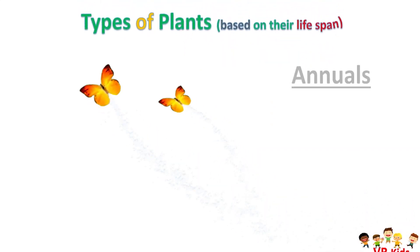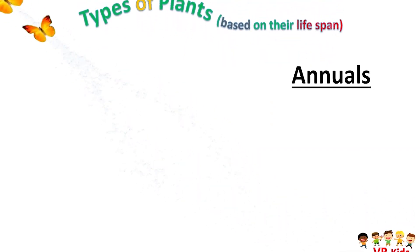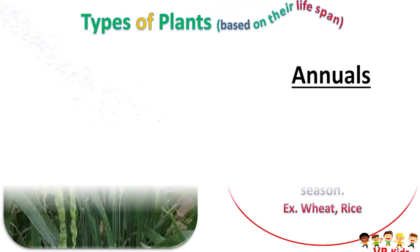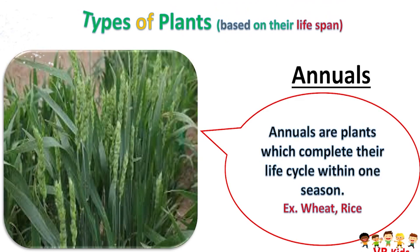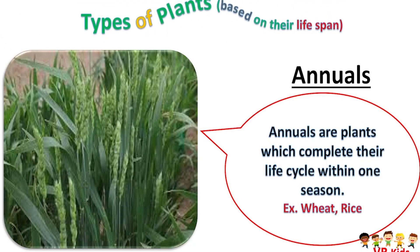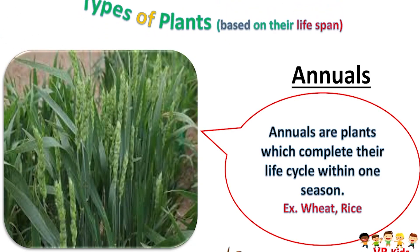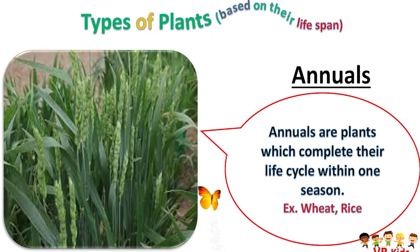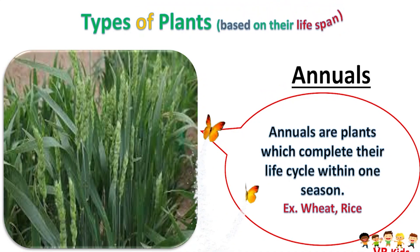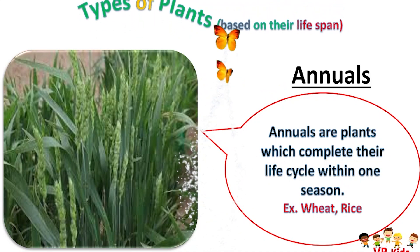First, annuals. Annuals are plants which complete their life cycle within one season. Examples: wheat and rice.